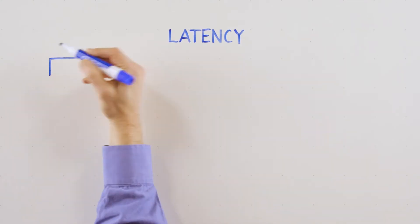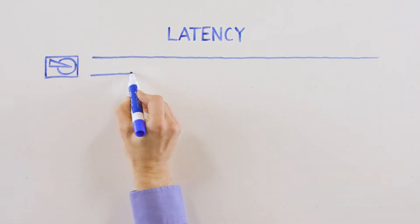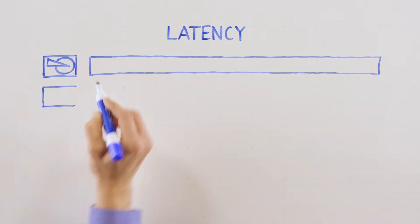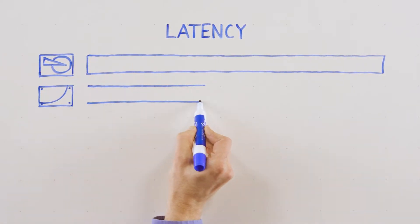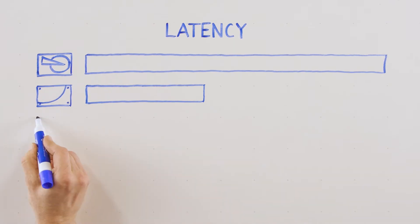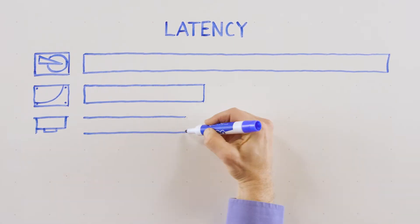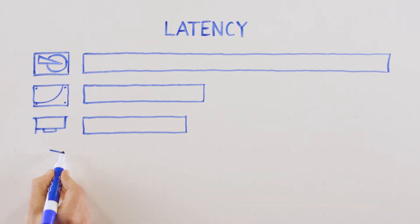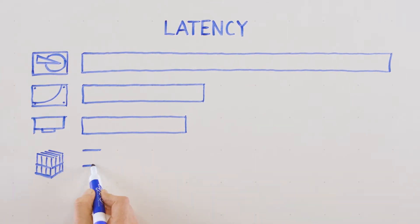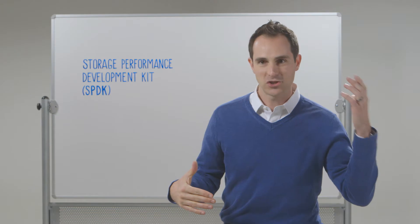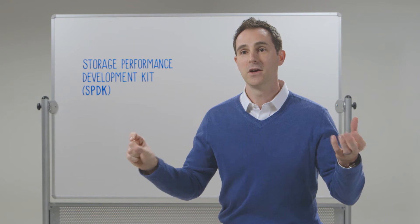Hard drives have really ruled the data center, but they have a big problem — they're slow. When SATA SSDs came on the market, they were much faster than hard drives, orders of magnitude faster. That was improved by moving to NVMe, which made drives faster still, and now as we've moved to this 3D cross point era, the drives get incredibly fast.